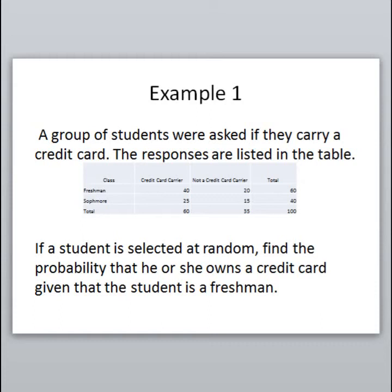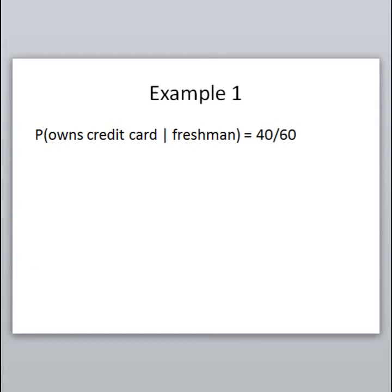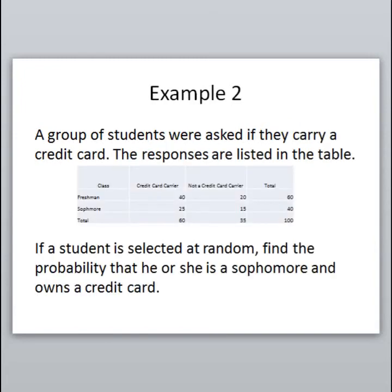That limits our sample size to just the 60 freshmen — we no longer care about the sophomores. We want to know how many of them own a credit card, and we see that 40 of the freshmen carry one. So the probability that somebody owns a credit card given that they're a freshman — that vertical line means 'given' — is 40 out of 60. You can leave your answers as unreduced fractions; you do not have to simplify them.